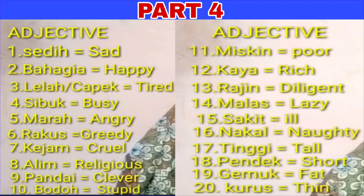Kosakata part keempat: sedih – sad, bahagia – happy, lelah atau capek – tired, sibuk – busy, marah – angry, rakus – greedy, kejam – cruel, alim – religious, pandai – clever, bodoh – stupid.